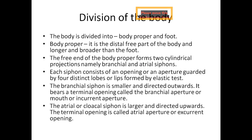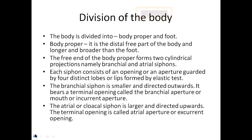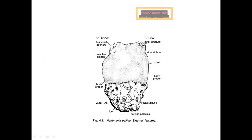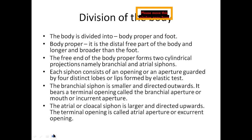In order to study the morphology of Herdmania, we divide the body into two important parts: number one, body proper, and number two, foot. The body proper is the upper, free end of the body — longer and broader than the foot. The free end of the body proper forms two cylindrical projections named the branchial and atrial siphons. These two siphons are respectively named the branchial and atrial siphons.